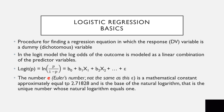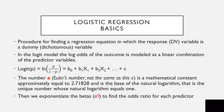Euler's number — not the same as the E for error — is a mathematical constant approximately equal to 2.71828, going on like pi, and is the base of the natural logarithm. It is the unique number whose natural logarithm equals 1. If I take the beta coefficients — the slope coefficients — and exponentiate them, I find the odds ratio for each predictor.